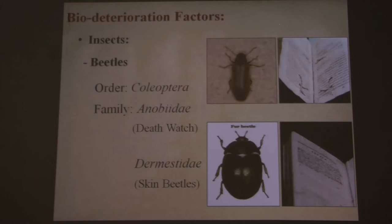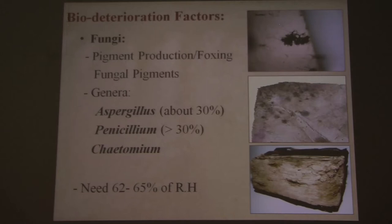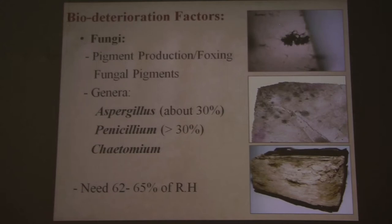The second factor is fungi, which produce pigment production — what we call in paper conservation foxing, referring to the color of the paper itself, or sometimes we call it fungal pigments. There are three main genera that cause severe damage to books and papers, specifically in high relative humidity: Aspergillus, Penicillium, and Chaetomium.